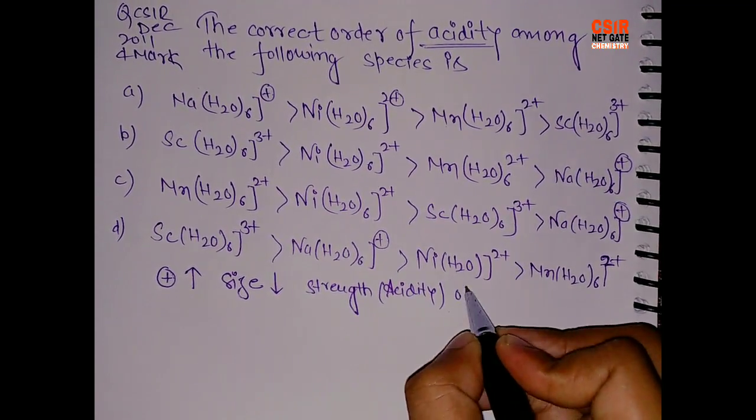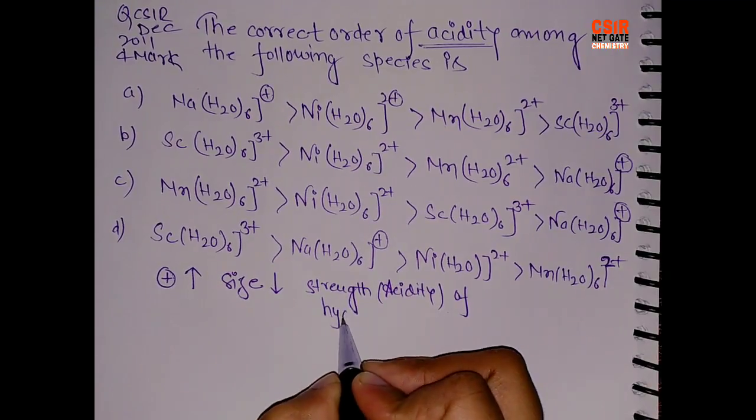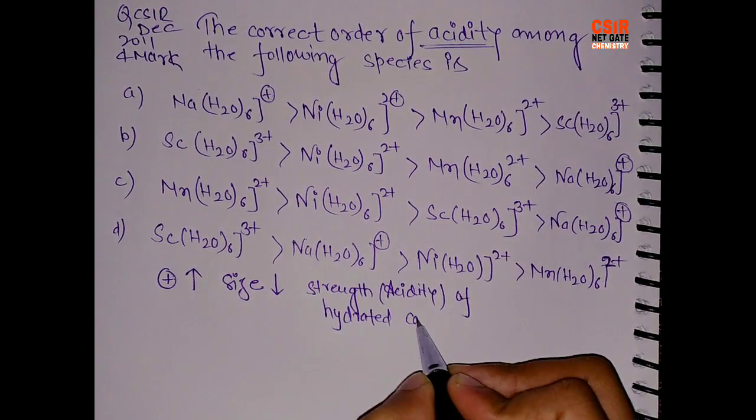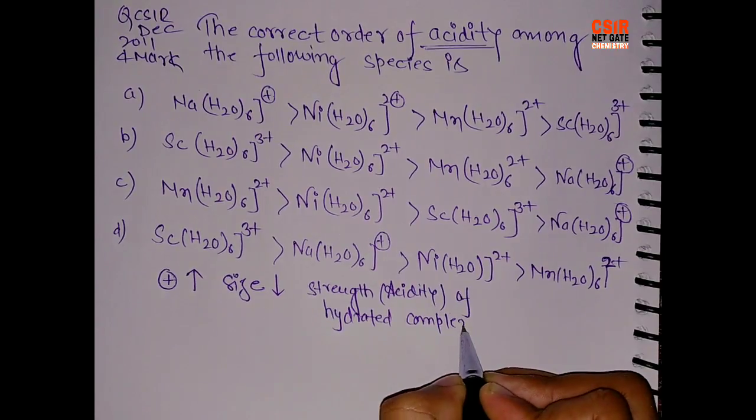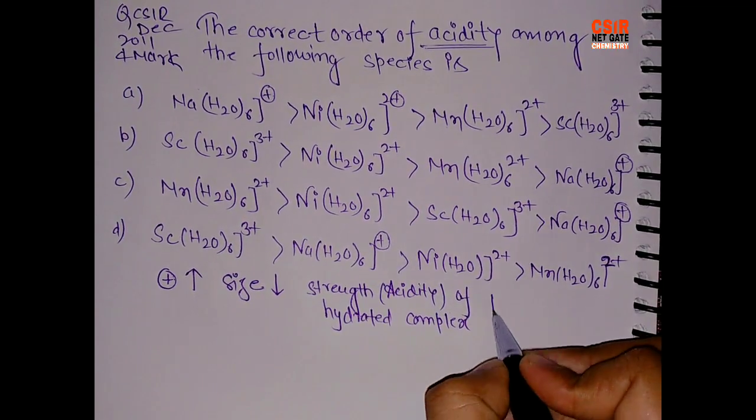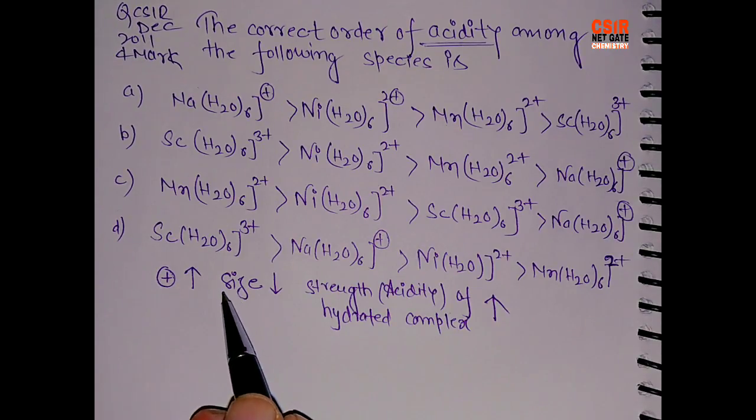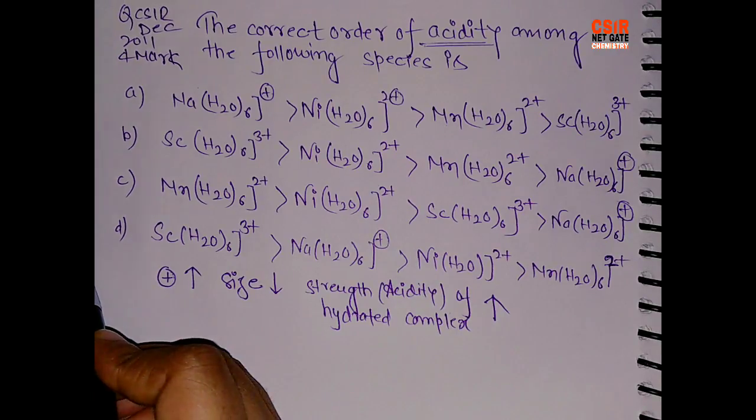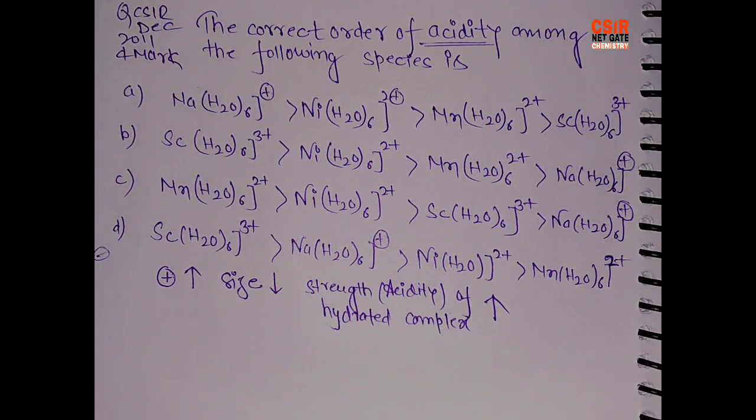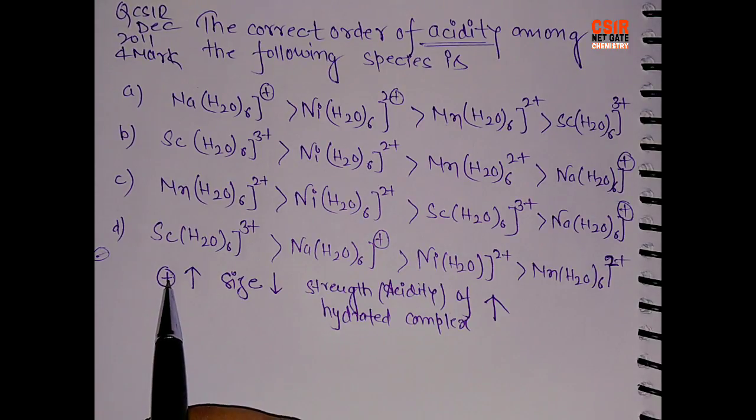And what will be the strength, acidity strength of course, of hydrated complex will be more. This is the simple funda we all know. Higher is the positive charge, smaller will be the size. Like same in the anion, when we have more minus charge, that means the size is increasing more and more. So more is the positive charge, lesser is the size.